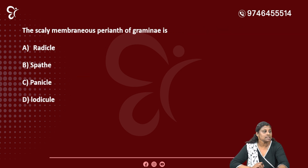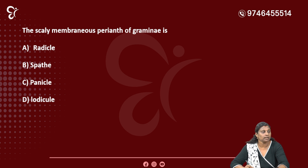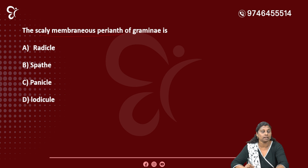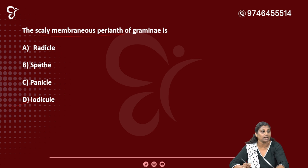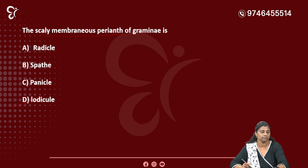Next question: the scaly membranous perianth of Gramineae is called — Option A: Spathe, Option B: Panicle, Option C: Spade, Option D: Lodicule. The correct answer is Option D — Lodicule. The lodicule is the scaly membranous perianth in grasses.